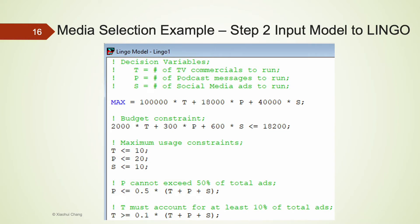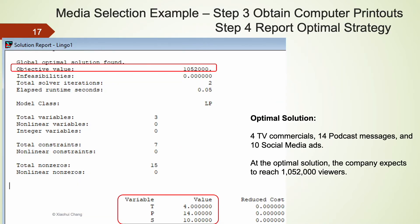We have successfully translated the original business decision problem into a mathematical model. In step 2, we input our model into Lingo. Steps 3 and 4 ask us to obtain computer printouts, interpret optimal solutions, and report the optimal strategy. The optimal solution for this problem is to run 4 TV commercials, 14 podcast messages, and 10 social media ads. With this optimal strategy, the company should expect to reach 1,052,000 viewers.